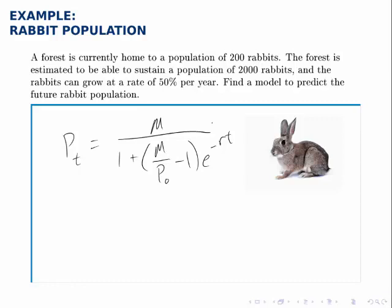P sub 0 is the initial population, R is the growth rate, T is time, and of course P sub T is then the population at that given point in time.